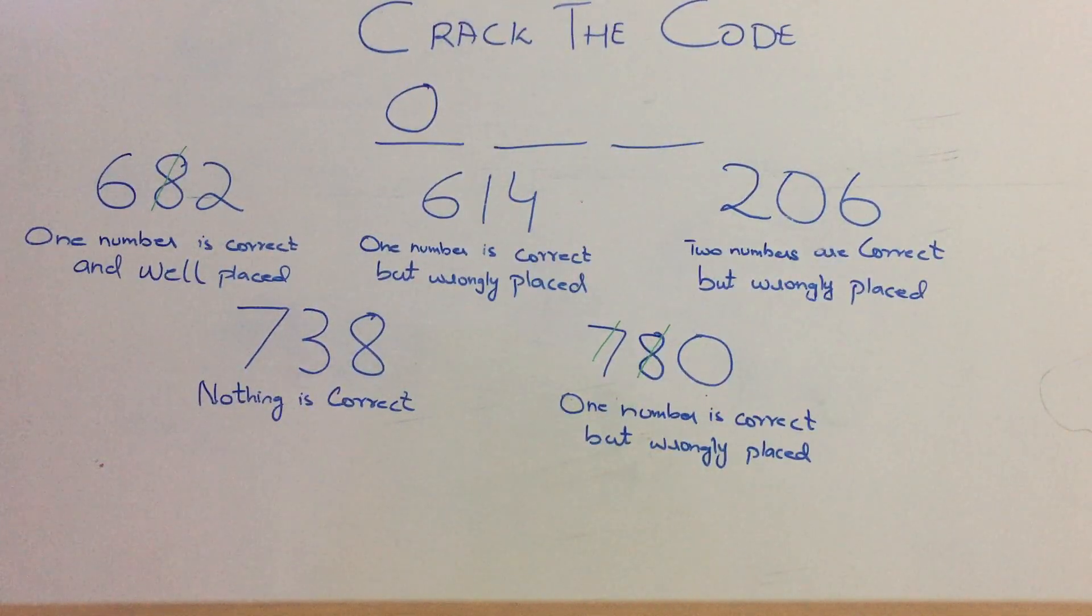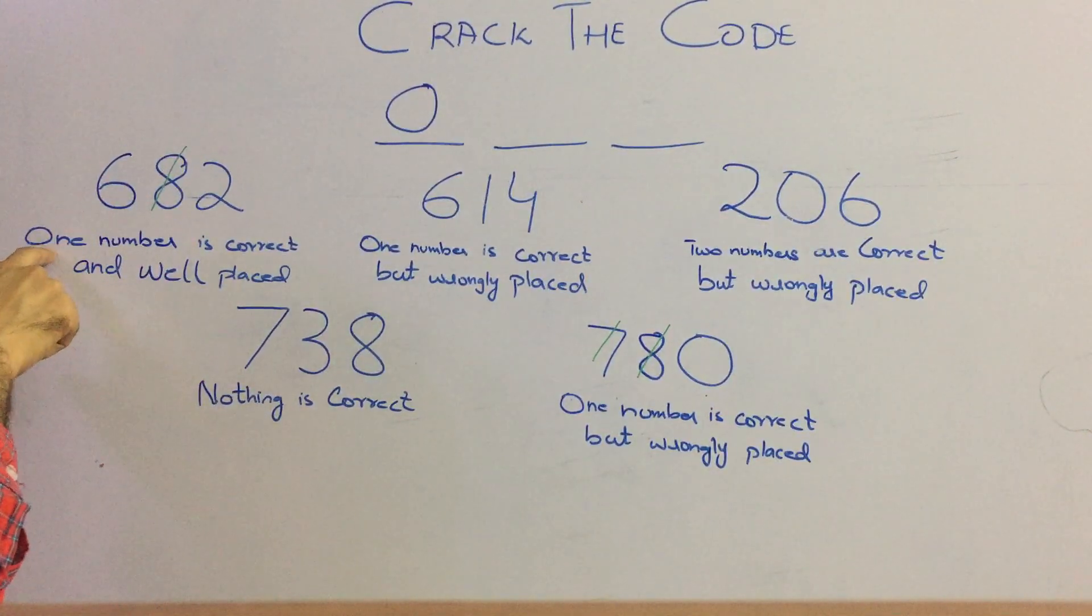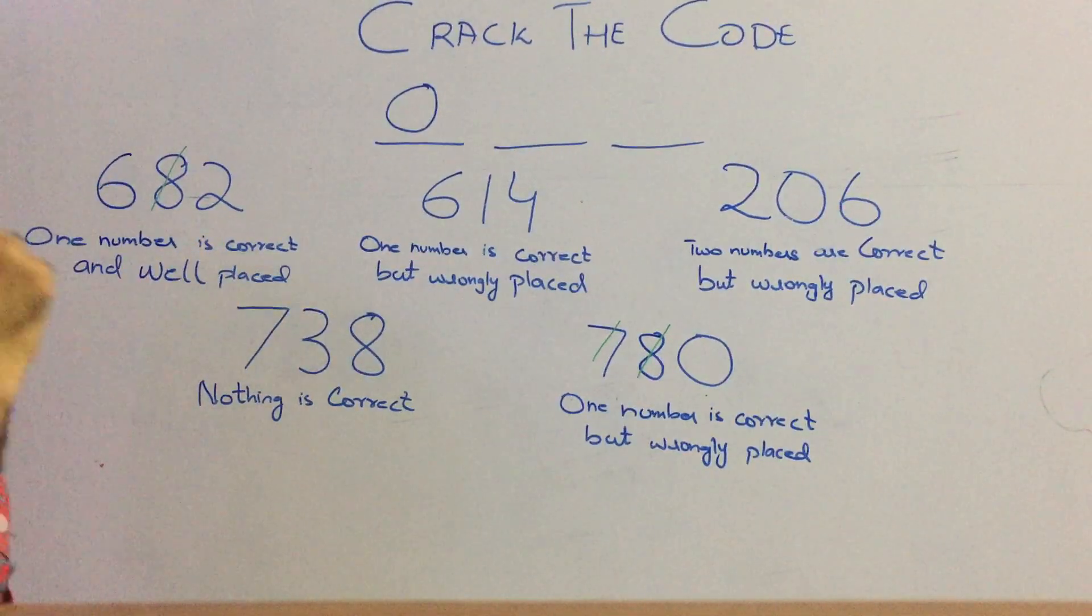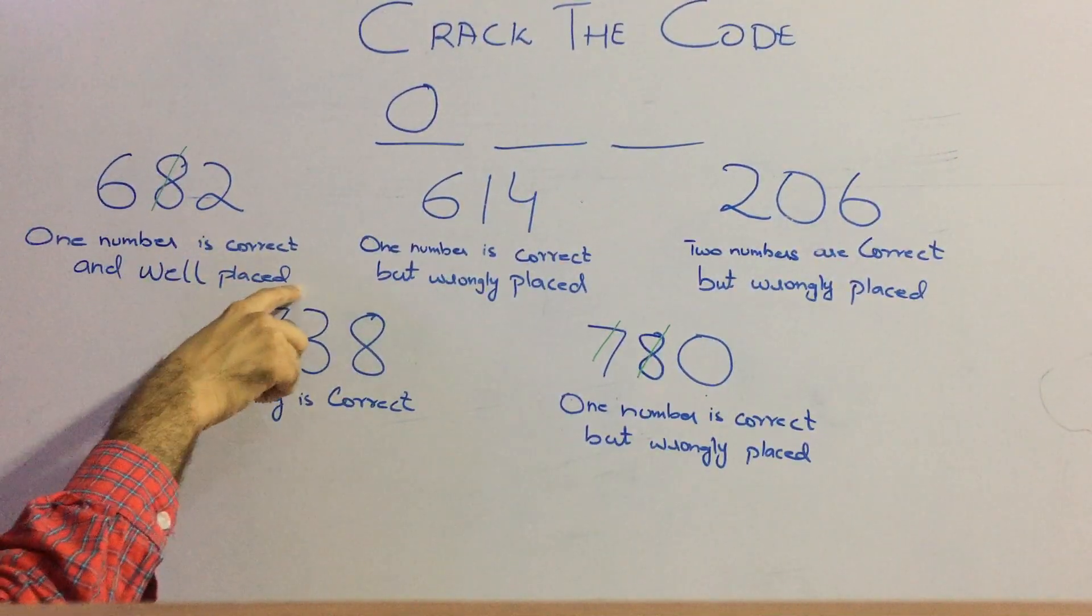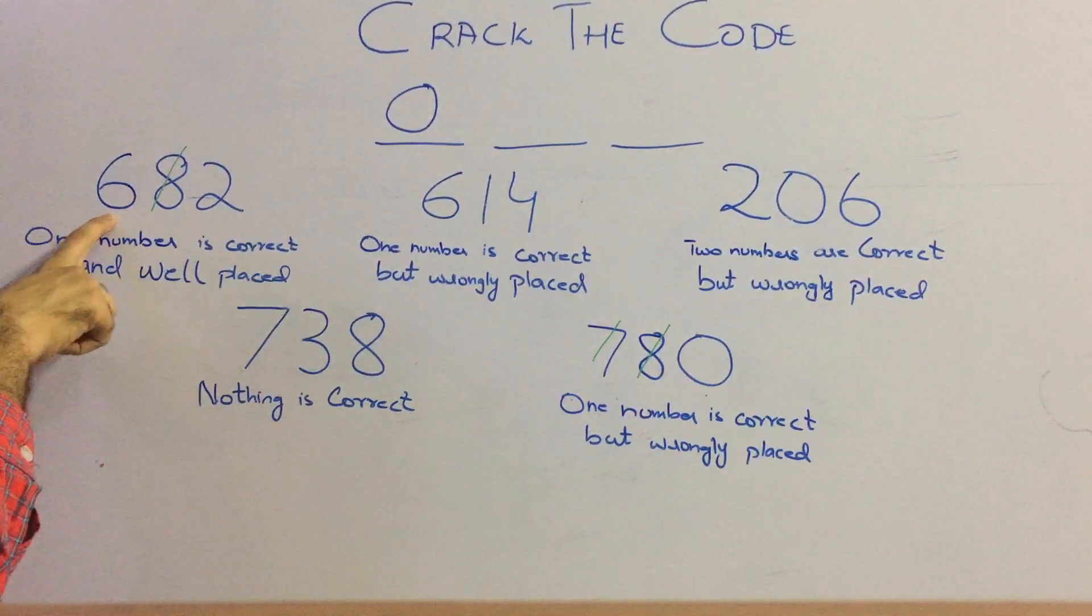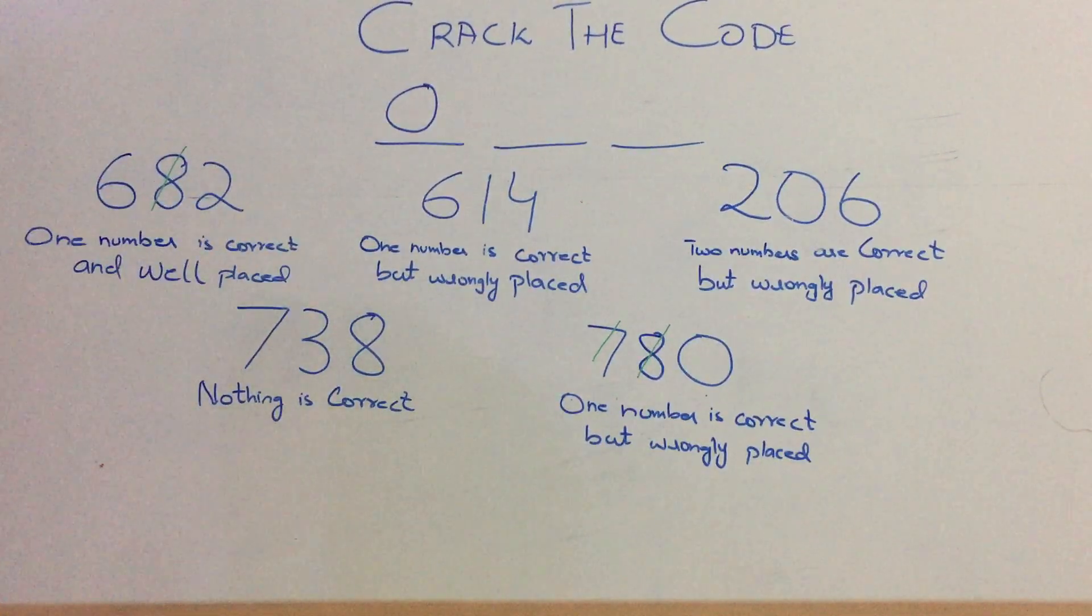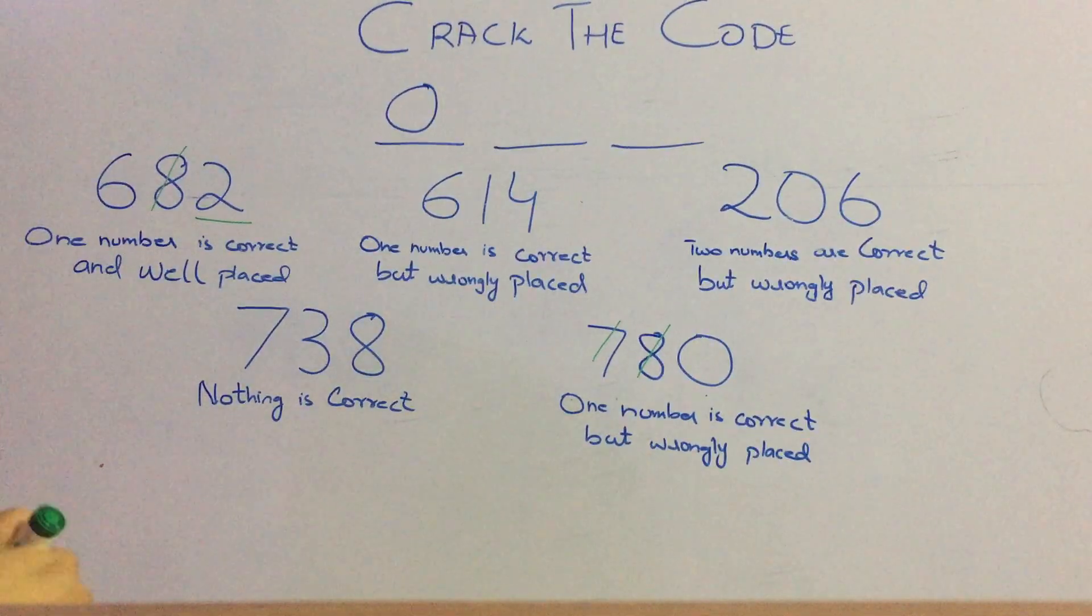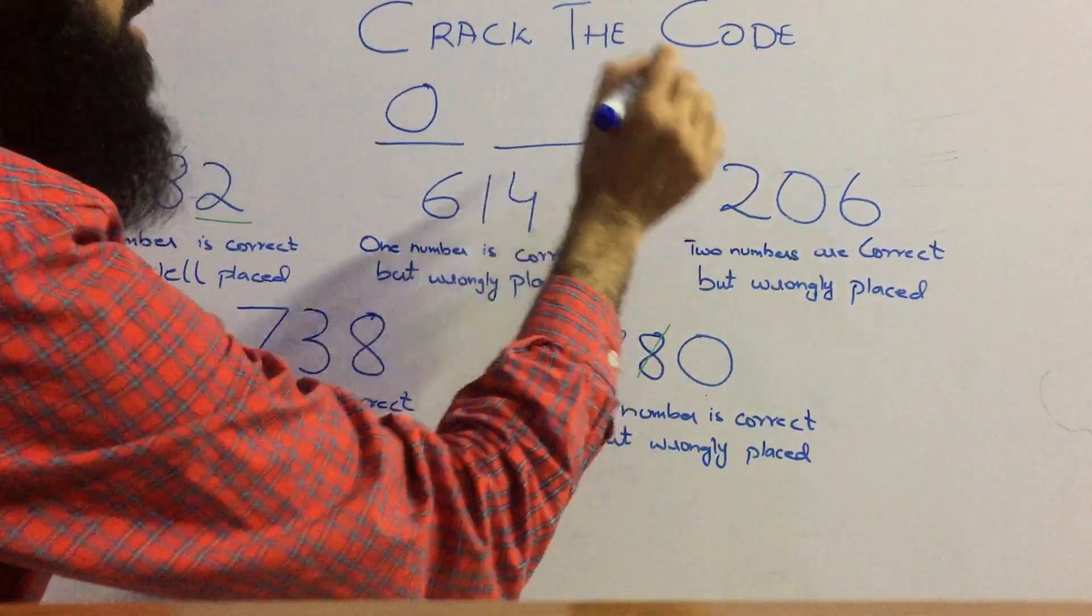We are done with the first number. Now let's find the second one. Go to hint number 1 - one number is correct and well placed. Here it can be either 6 or 2. But if the number is well placed, 6 can't be the correct number, as in the first place we have got 0. So 2 is at the correct place. We have selected 2 from here and we write 2 over there on the third place.